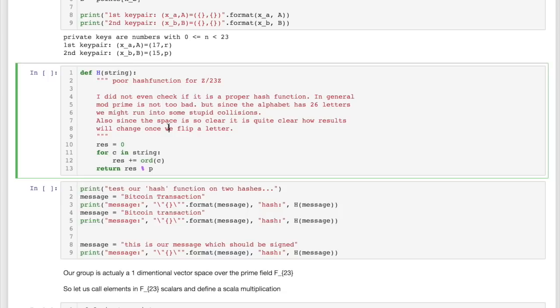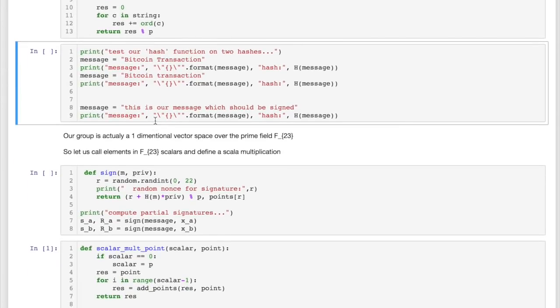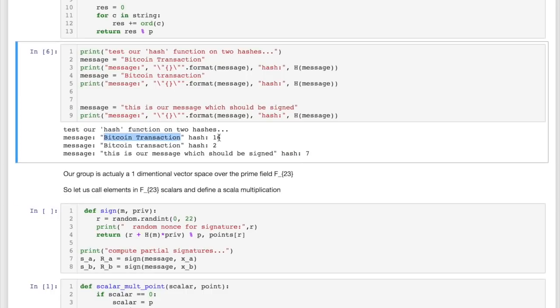I define a hash function. This hash function is a really poor hash function. It just takes a string, translates it to numbers, and it adds all those up, and it calculates modulo our prime number. I mean, this is a working hash function, but it's not the best hash function. We can still see that it somewhat behaves like a hash function. If we execute this code, we see that if we take this message, Bitcoin transaction, the hash is actually 16. And if we just change this big T to a small t, our hash changed quite a lot. And later on, we're going to use this message to be signed, which is our kind of like Bitcoin transaction later on, and it has the hash value of 7.